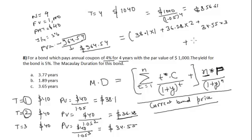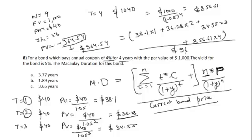This whole sum is divided by the current price of the bond, which is $964.54. Hence, the Macaulay duration of the bond is closest to 3.77 years.